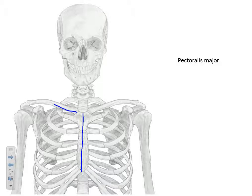From there the fibers will converge and attach to a spot on the humerus actually just lateral to the bicipital groove. So the bicipital groove, this would be the lateral ridge of the bicipital groove where the pectoralis major attaches.